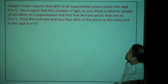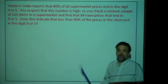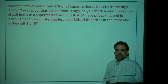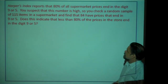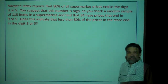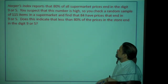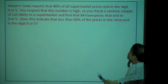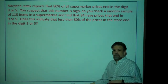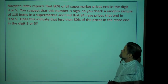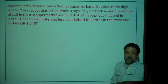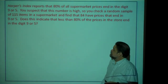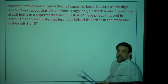Here's our next example. Harper's Index reports that 80% of all supermarket prices end in the digit 9 or 5. Think about it — you go to the supermarket and really frequently that last digit is a 9 or a 5. But you're thinking 80% seems high — I think it's lower than that. So you check a random sample of 115 items in the supermarket and find that 84 have prices that end in 9 or 5. Does this indicate that less than 80% of the prices in the store end in the digit 9 or 5?